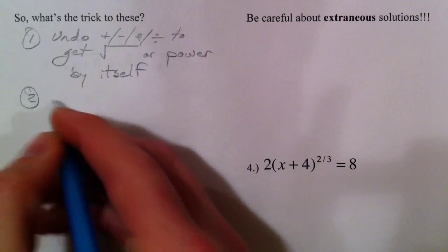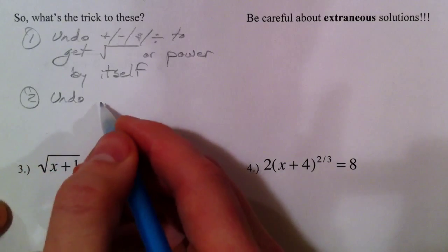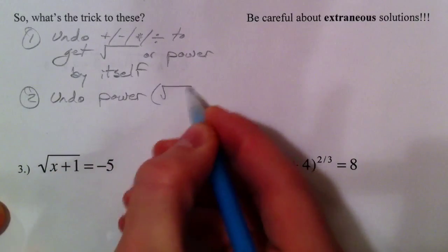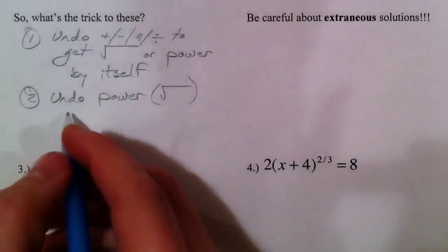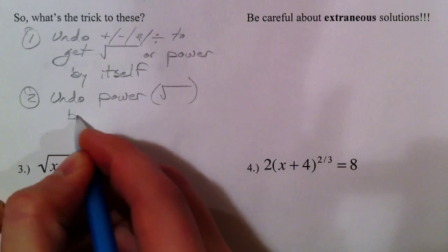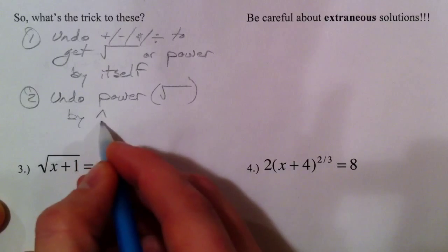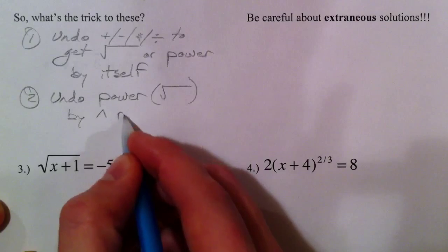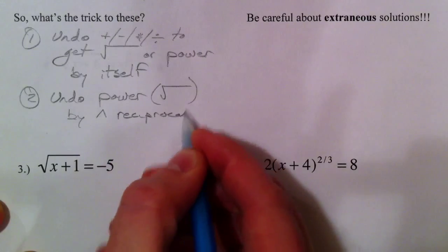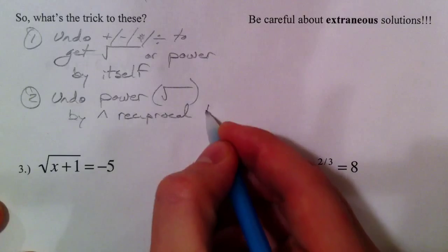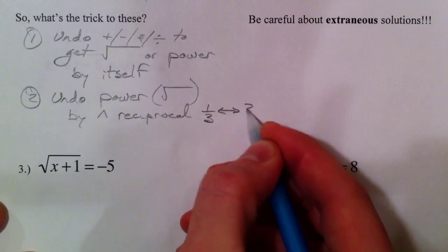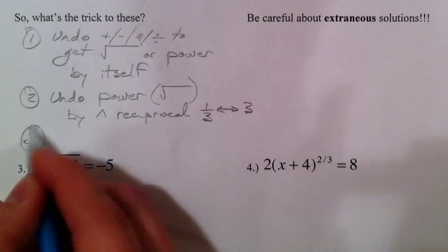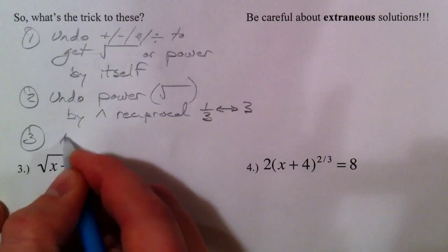And so then you undo the power. Undo the power or the square root, whatever it is, the root, by raising it to its reciprocal. This is that caret button, kind of on the sign, but to its reciprocal. So what we just saw over there, we had 1 3rd, and we raised it to the 3rd power, because they were reciprocals. Same thing with the 1 half to the 2. And then solve the rest, finish solving.